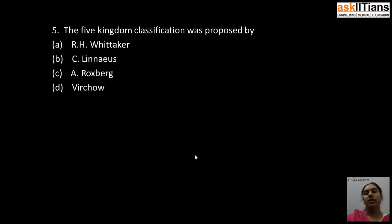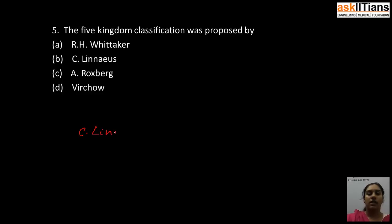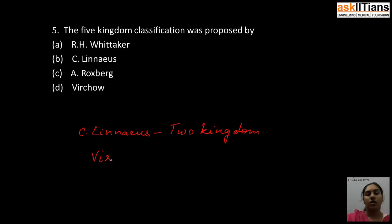Our next question is: the five kingdom classification was proposed by — A) R.H. Whittaker, B) C. Linnaeus, C) A. Roxburgh, D) Virchow. The correct answer is A: R.H. Whittaker. The five kingdom classification was proposed by R.H. Whittaker. Among the other options, C. Linnaeus gave the two kingdom classification, and Virchow gave the cell theory.